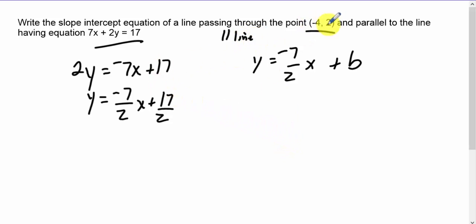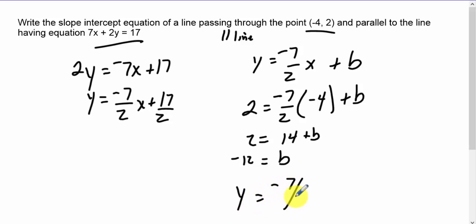Then we have to plug in this point (-4, 2), so I have 2 = -7/2 times -4, trying to find the b value. That reduces—negative 2 times negative 7 is 14. 14 + b = 2, so -12 = b. Therefore y = -7/2 x - 12.